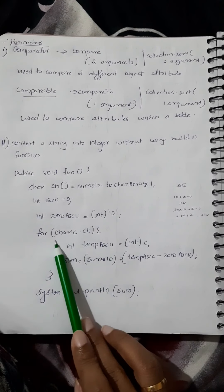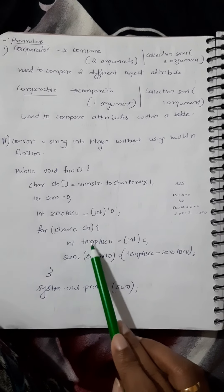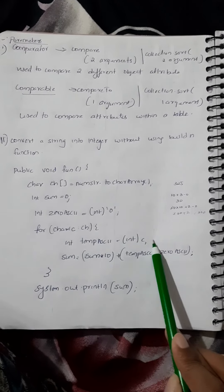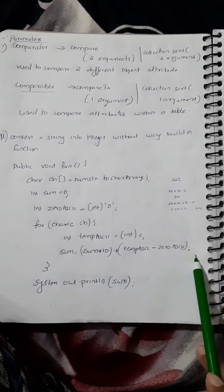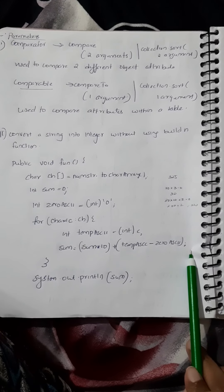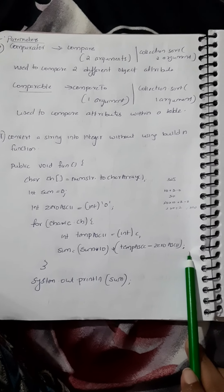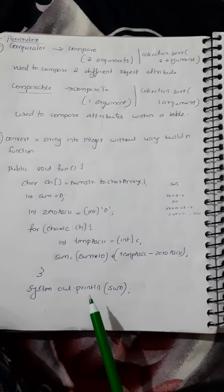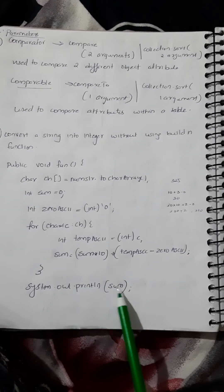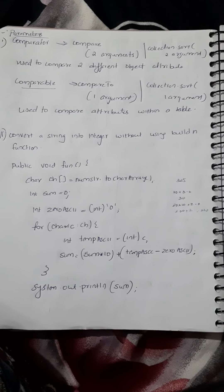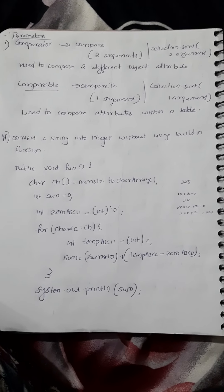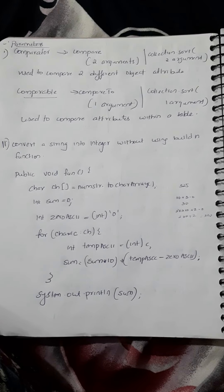Now you can convert a string into an integer without using the input partition. Parse the string into context — you have a union with a smaller value. If you want to compare three parameters, you can compare two-dimensional characters.